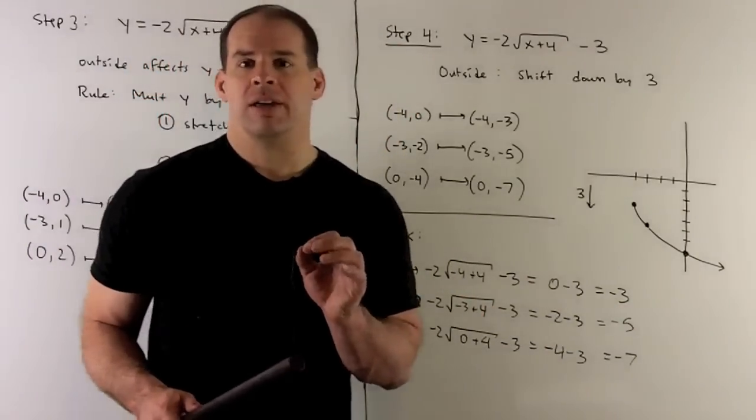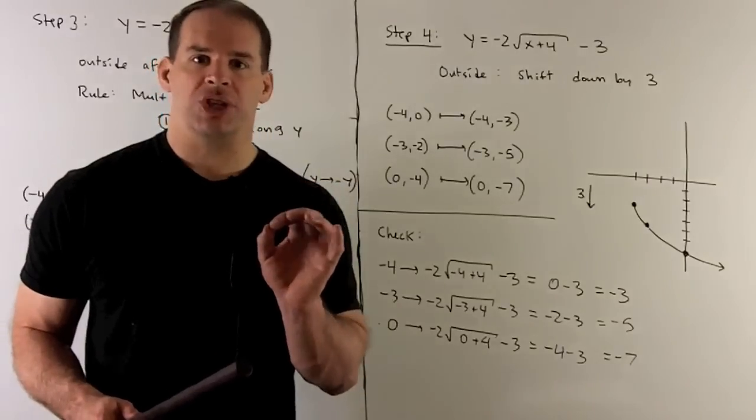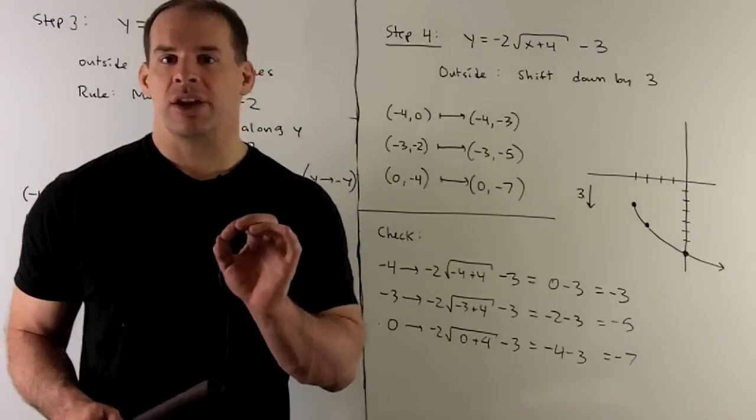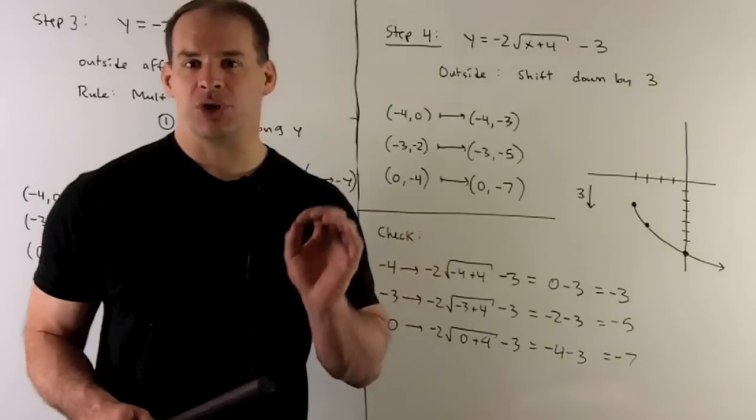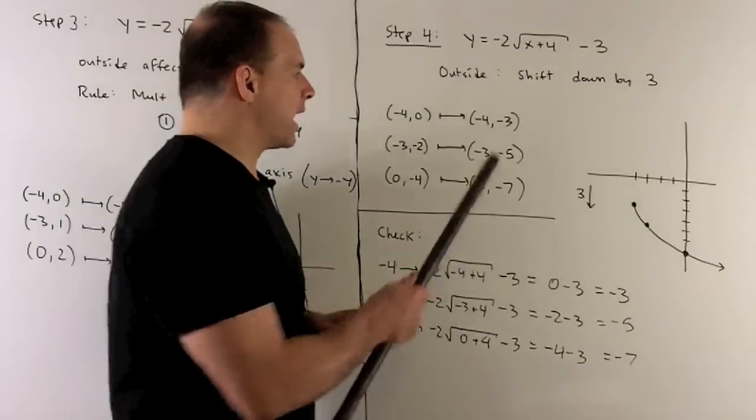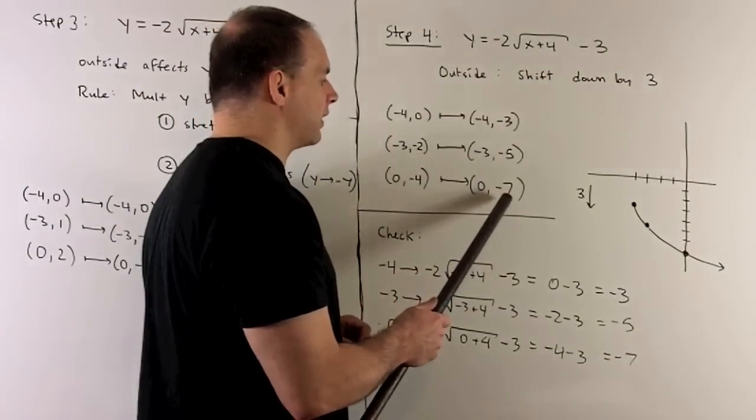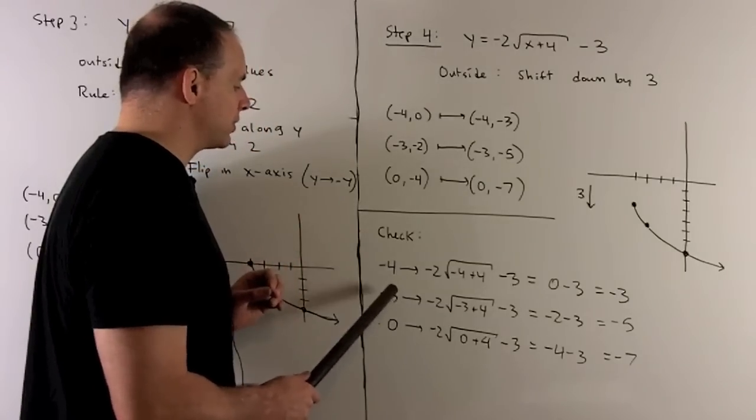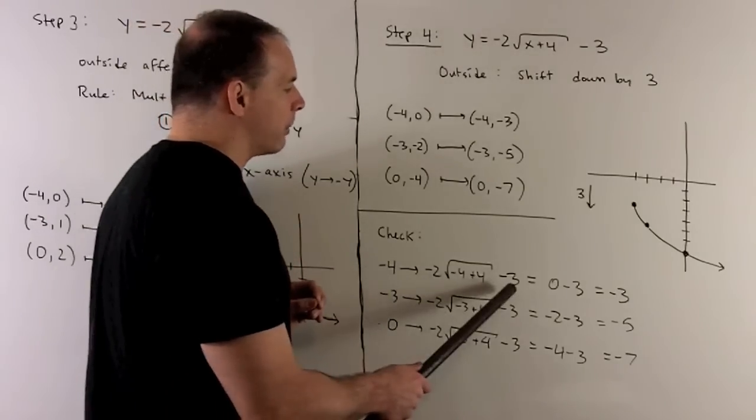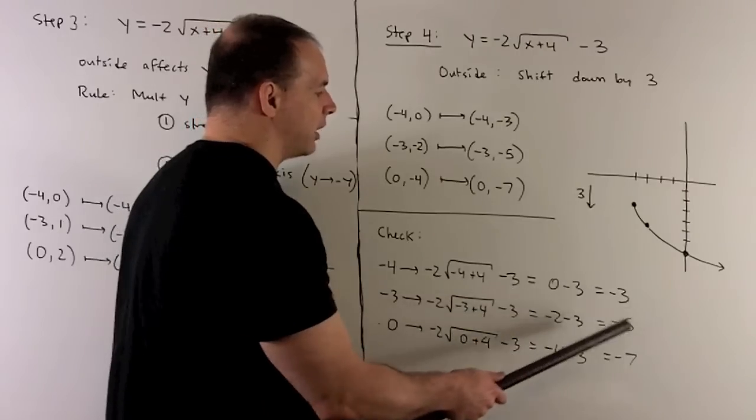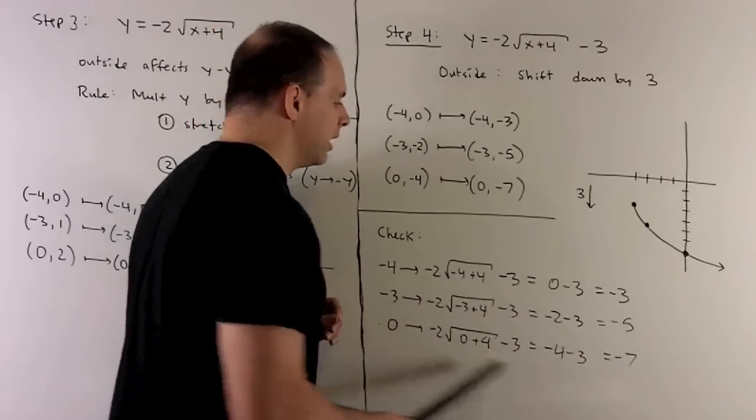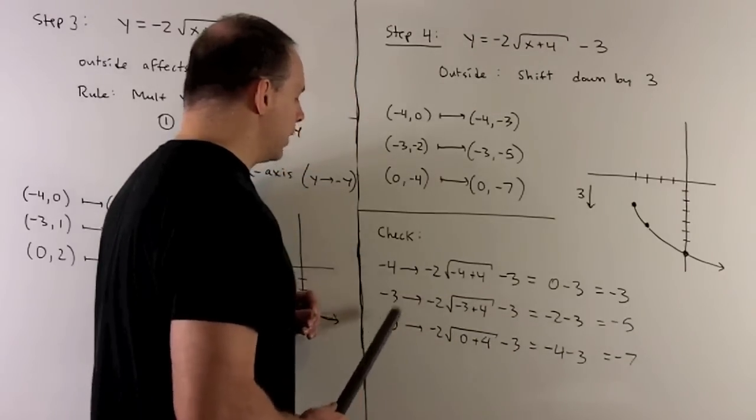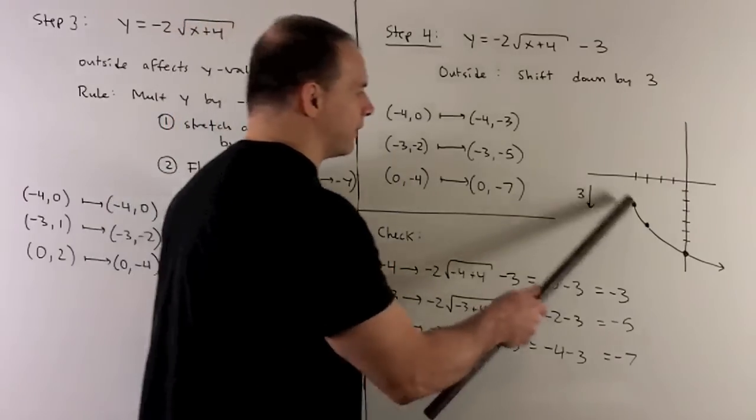Now, of course, if you want to check, this is a pretty weak check, but you should do it. Just stick your 3 points into your original equation. Make sure you get that minus 3, minus 5, and minus 7 out. So we compute each of these. We put in a minus 4, minus 3, and a 0. Crank out the numbers, and then you'll note your minus 3, your minus 5, and your minus 7 come out. So our 3 points are definitely on the graph of this thing.